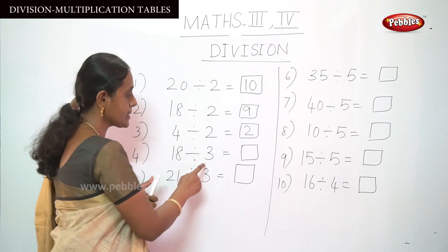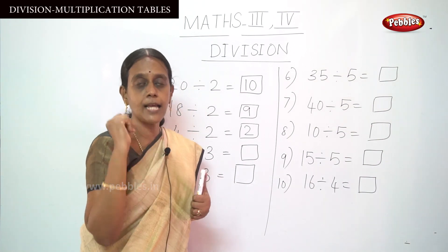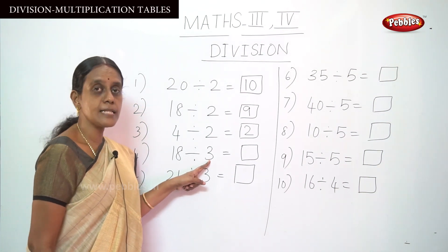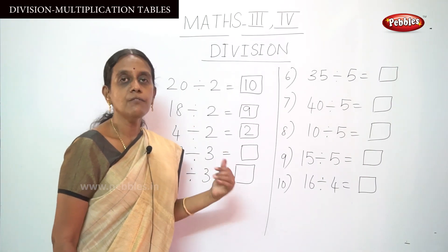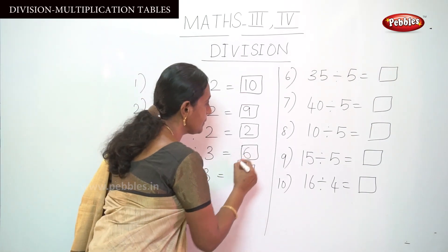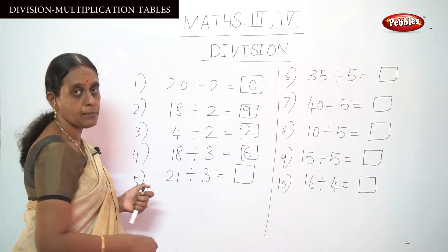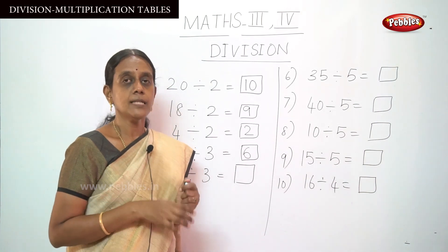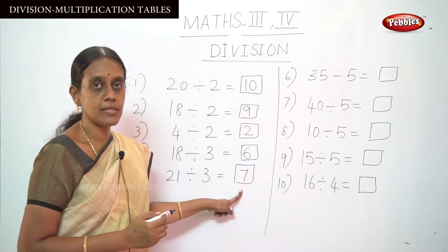Next, move on to 18 divided by 3 — you should say the 3 table. From 3 3's are 9, 4 3's are 12, 5 3's are 15, and 6 3's are 18. So put 6 here as the answer. For the next sum, 21 divided by 3, say the 3 table up to the number 21: 5 3's are 15, 6 3's are 18, and 7 3's are 21. So the answer, the quotient, will be 7.